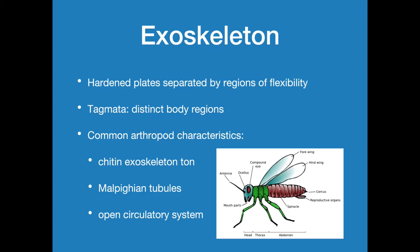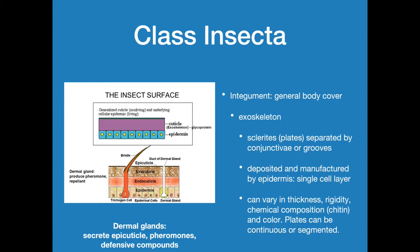Each of the different distinct regions — the head, thorax, and abdomen — are the tagmata collectively. The most important parts include the compound eye, the ocelli (which are kind of like simple or fake eyes), the antennae, different mouth parts depending on the insect, fore wing and hind wing — though not all insects have wings — the cerci and reproductive organs. These spiracles run along the abdomen and thorax, and then we have their segmented legs.